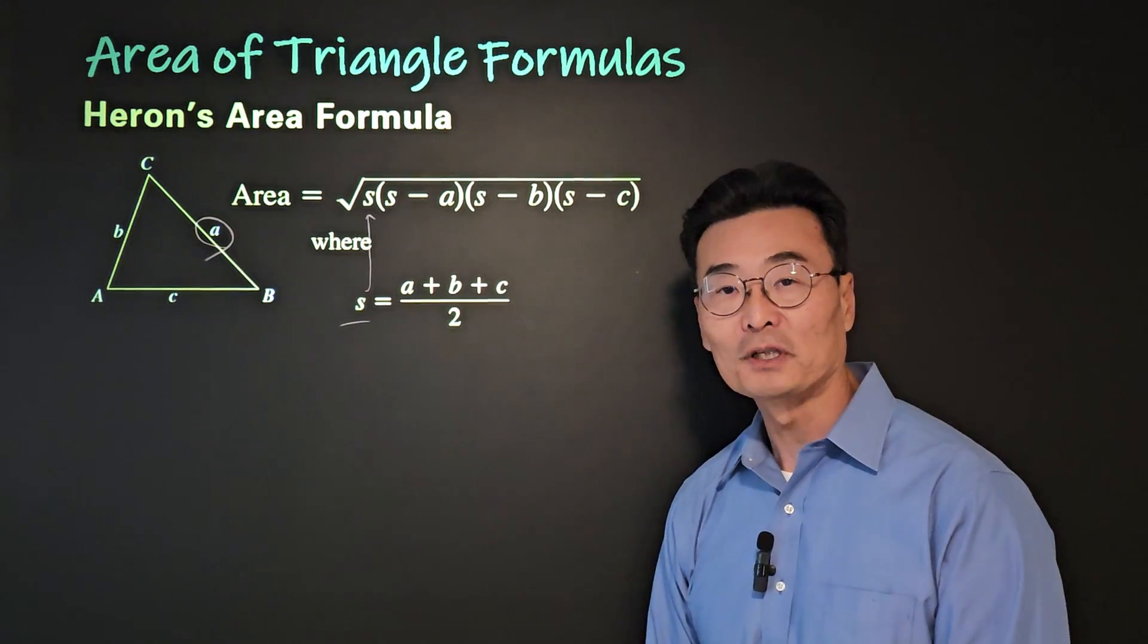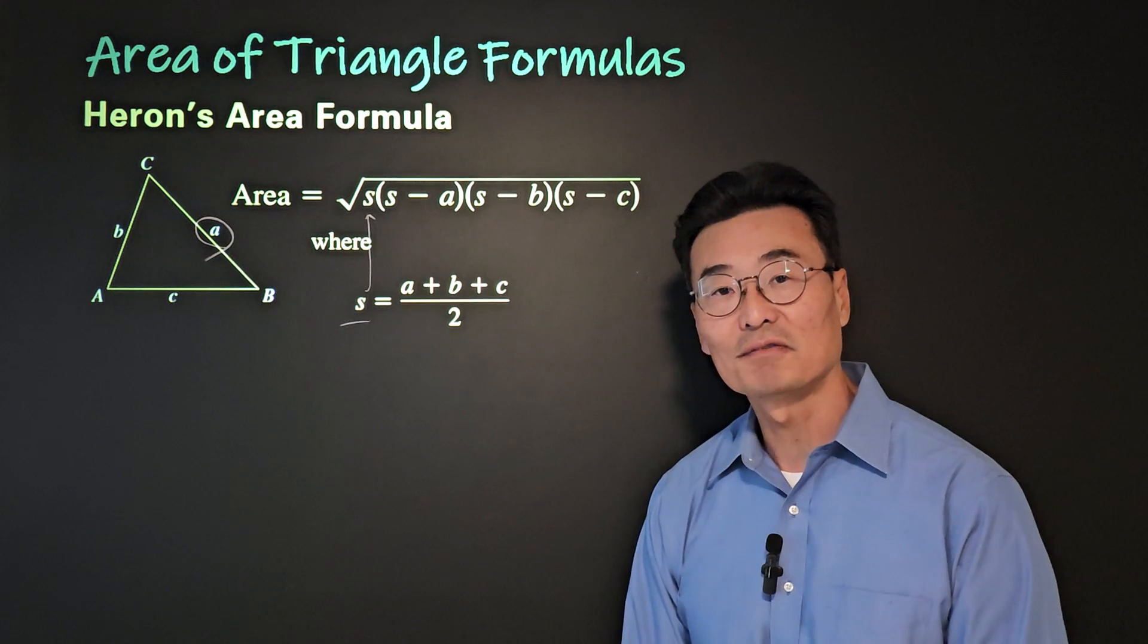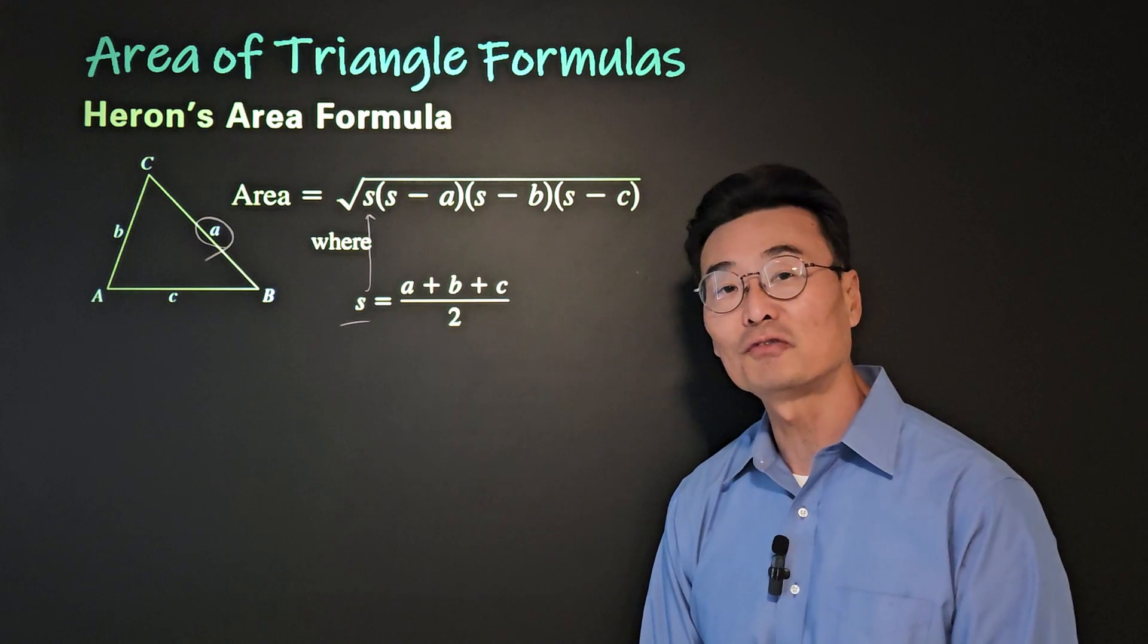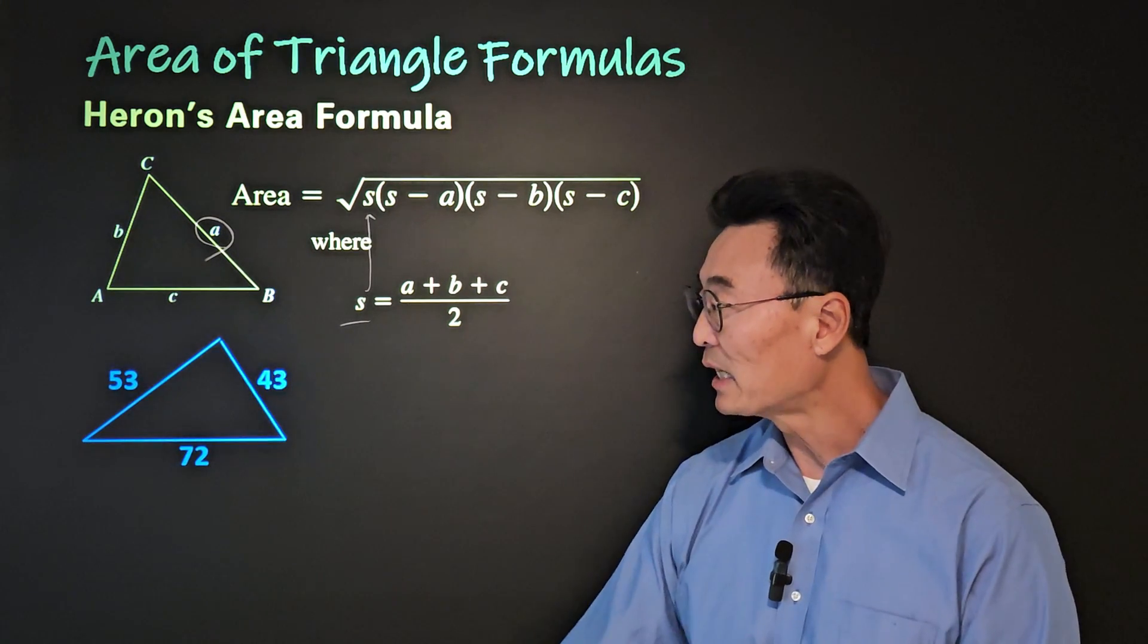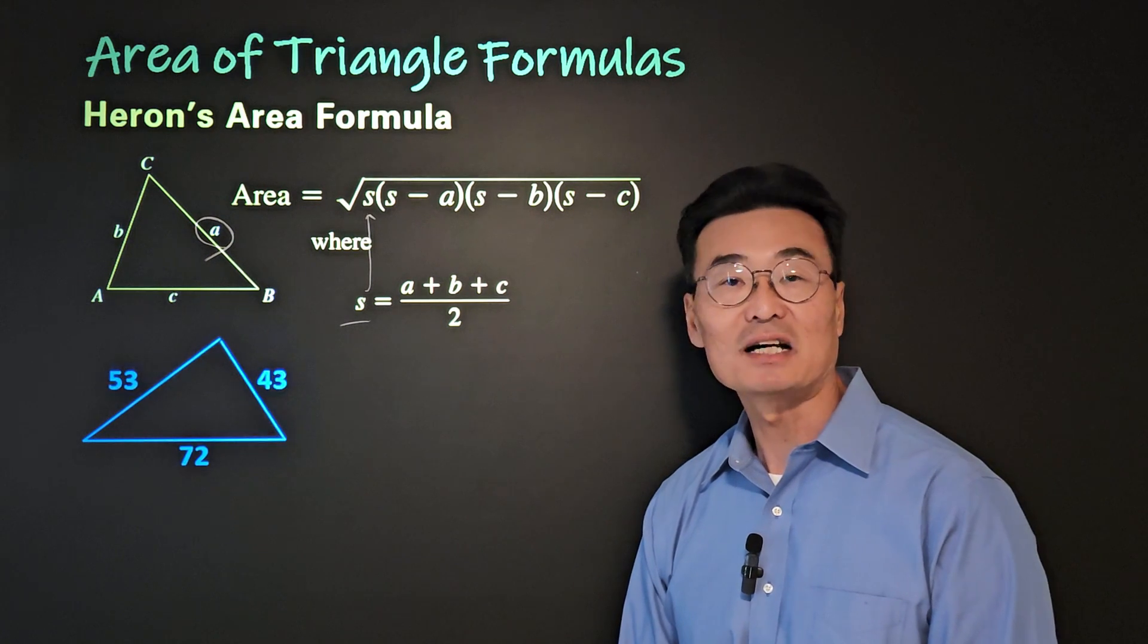So it's a pretty straightforward formula, where once you find the value of s, you could quickly find the area of a triangle. So let me use the formula using a sample triangle here, where we have 53, 43, and 72 as the sides of a triangle.